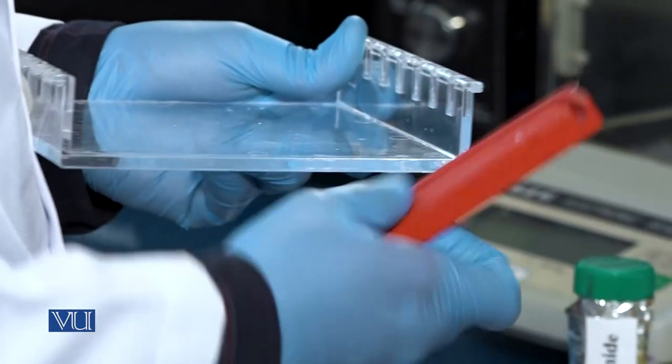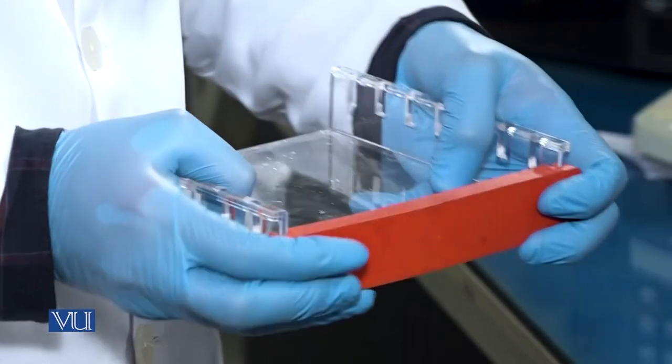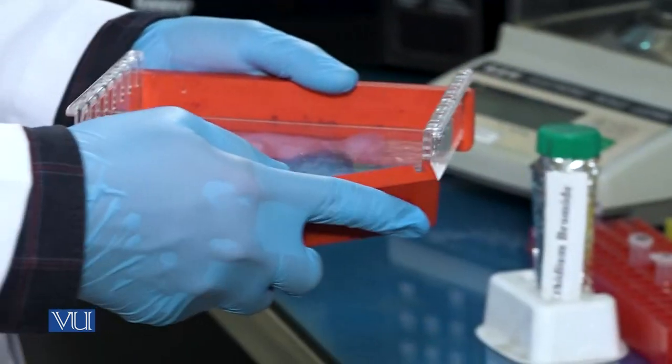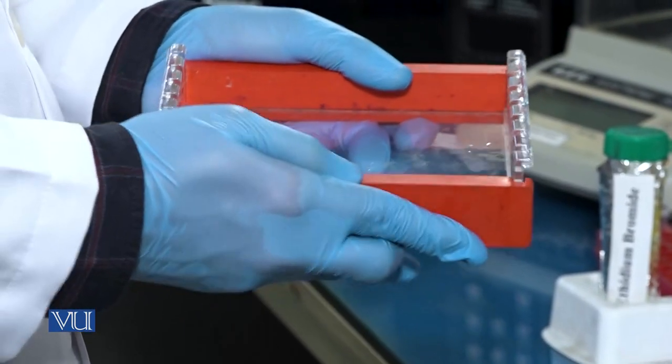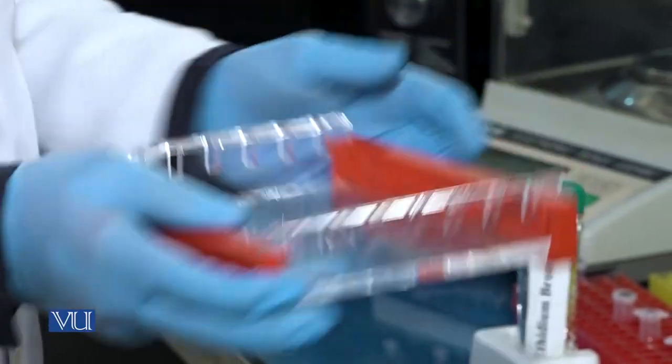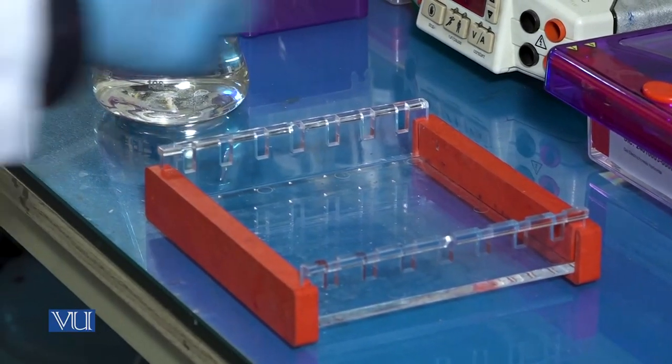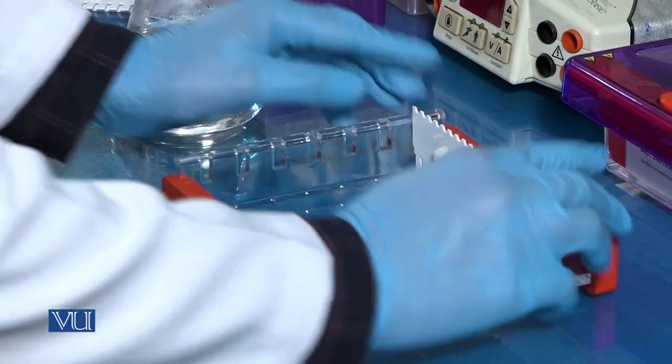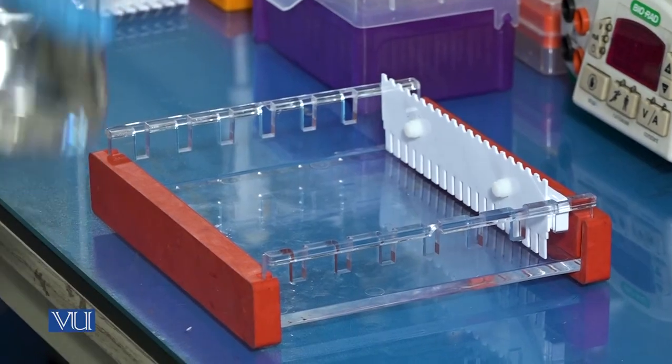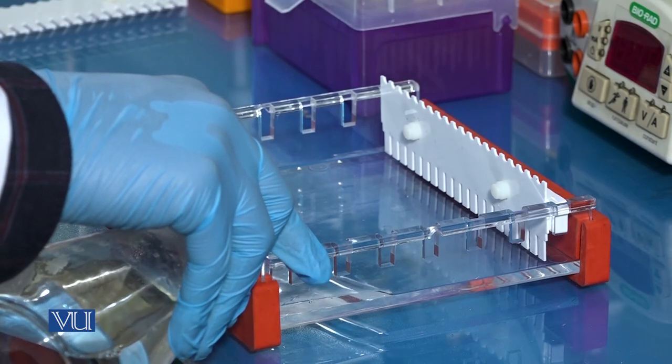After adding the ethidium bromide, now assemble the gel caster to pour the gel. Place comb in it to make wells. Now pour the gel in the caster carefully.